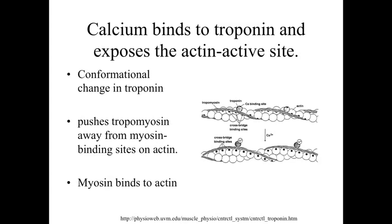That calcium is released into the sarcoplasm — the cytoplasm of the skeletal muscle cell — and it binds to troponin. Troponin, as a calcium-binding protein, changes its shape upon binding calcium. By changing shape, it moves, and when it moves it drags tropomyosin along with it. When tropomyosin moves, it exposes the active sites on the actin — the sites where the myosin head can interact with the actin. So with calcium present, we expose the actin and allow myosin to interact with it.